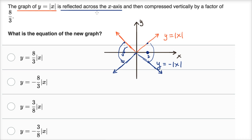But they didn't ask us to just reflect across the x-axis. They then want us to compress vertically by a factor of eight-thirds. So let's think about this a little bit. Compress vertically by a factor of eight-thirds. So if they said stretch vertically by a factor of eight-thirds, then I would just multiply this by eight-thirds.